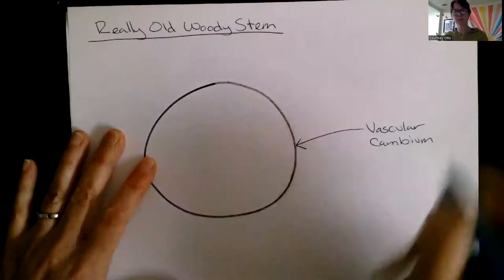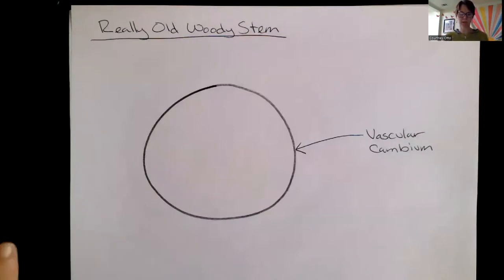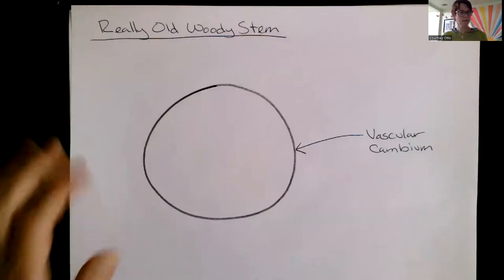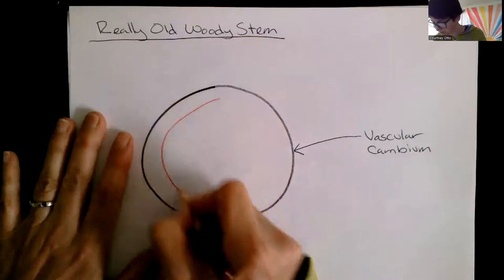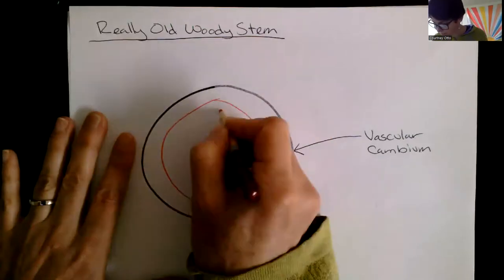Dividing to the inside to produce secondary xylem and to the outside to produce secondary phloem. Now secondary xylem in a really old woody stem is going to produce all of these layers that you've seen before.